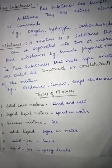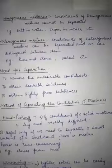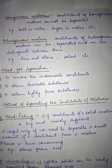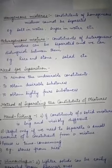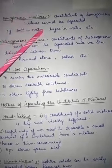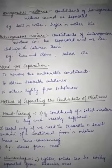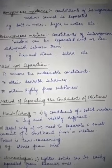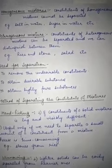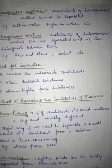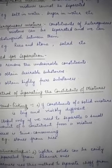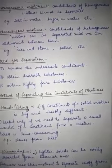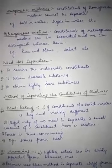Now we have homogeneous mixtures. In a homogeneous mixture, the different constituents cannot be separated and cannot be distinguished from each other. For example, when we mix salt in water, it is so well mixed that you cannot distinguish or separate what was added. Similarly, sugar dissolved in water is so well mixed that you cannot separate it — these are called homogeneous mixtures.